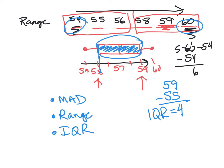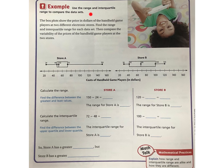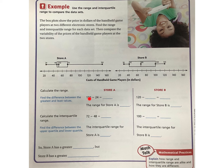Let's look at the last example: use the range and the interquartile range to compare data sets. A box plot shows the price in dollars of handheld game players at two different electronic stores. For Store A, find the range: largest value minus smallest value. That's 150 minus 24, which is 126. That is the range for Store A.